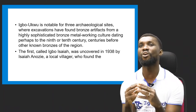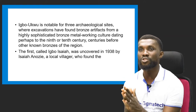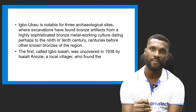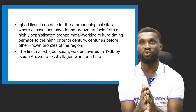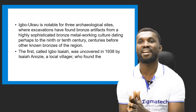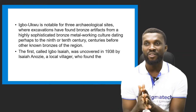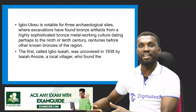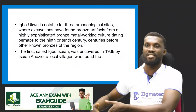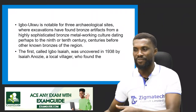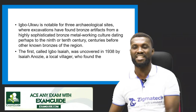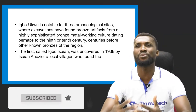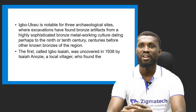The first site, called Igbo Isaiah, was uncovered in 1938 by Isaiah Anozie. He was digging pit toilets in his backyard when he discovered some metalwork under the ground. He dug them out and discovered that these were beautiful bronze artifacts. So a local villager found bronze works while digging beside his home.